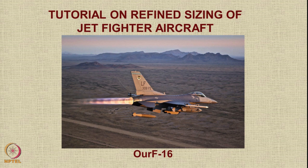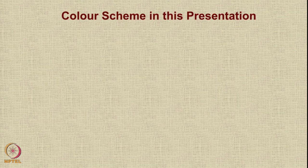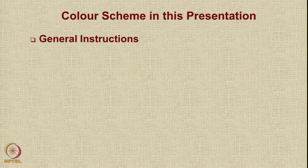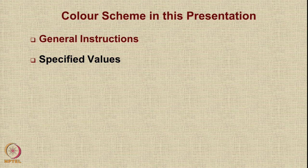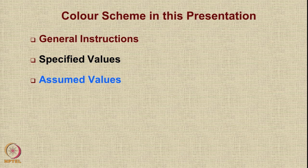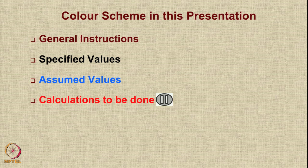Hello, let us have a look at how we carry out refined sizing of a military aircraft. As an example, we have taken our F-16C, which is a theoretical aircraft loosely modeled around the F-16C. We will follow a color scheme in this presentation. Instructions of a general nature will be shown in brown. Values for our F-16C taken from a standard source or specified from the mission profile will be shown in black. Assumed values will be shown in blue. Calculations you have to do will be shown in red with question marks and a pause symbol.